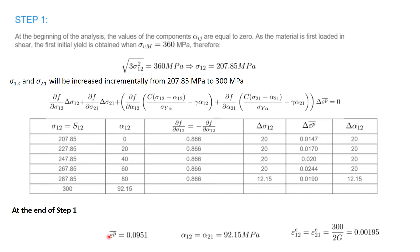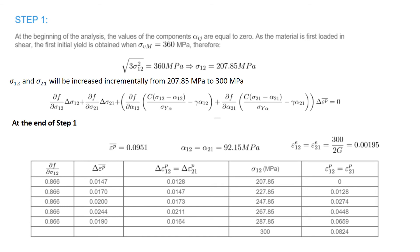At the end of step 1, the total equivalent plastic strain is the sum of all incremental components. Alpha₁₂ and alpha₂₁ are equal to the sum of their respective components, and the elastic strains are given by the elastic constitutive law. The plastic strain components can be calculated using the associated flow rule. The plastic strain components epsilon₁₂ and epsilon₂₁ are equal to each other and are given as a function of the equivalent plastic strain, from which the increments in plastic strain are accumulated.